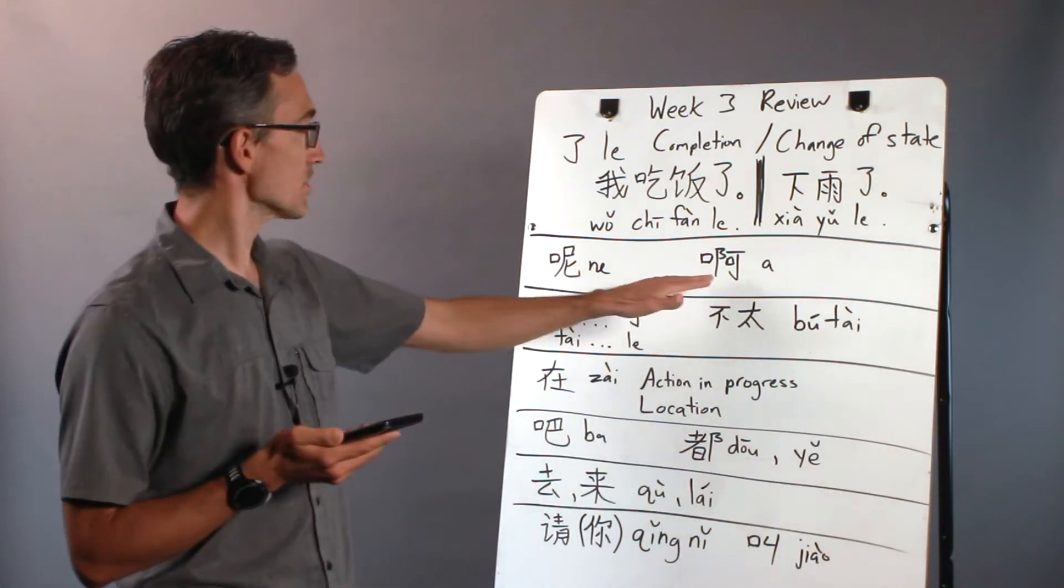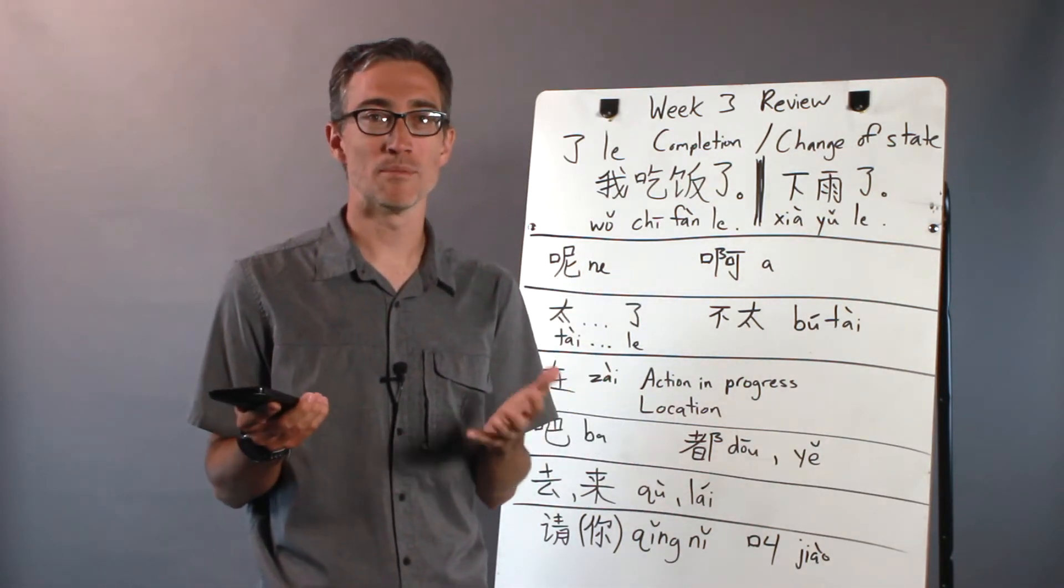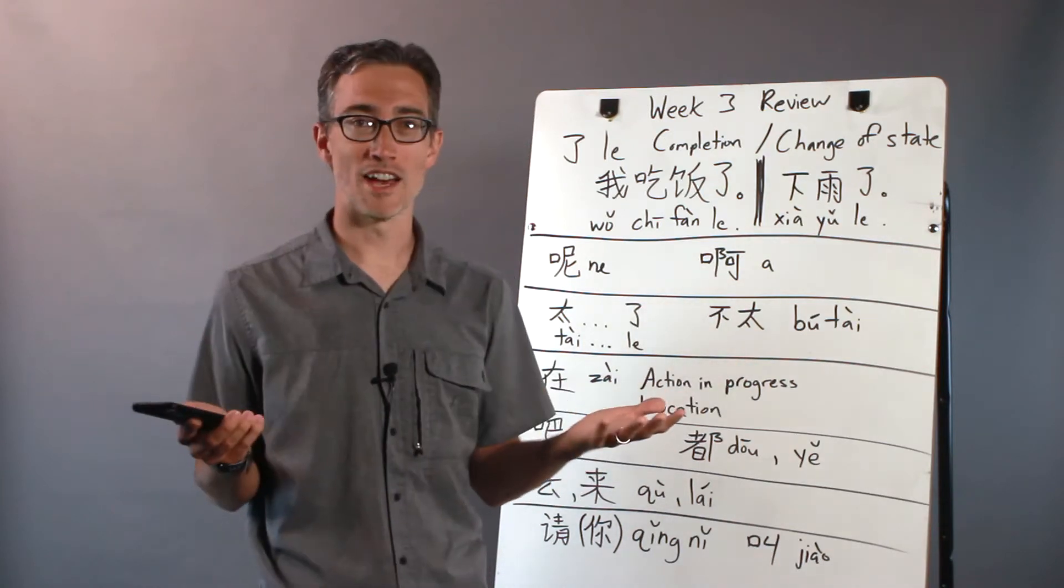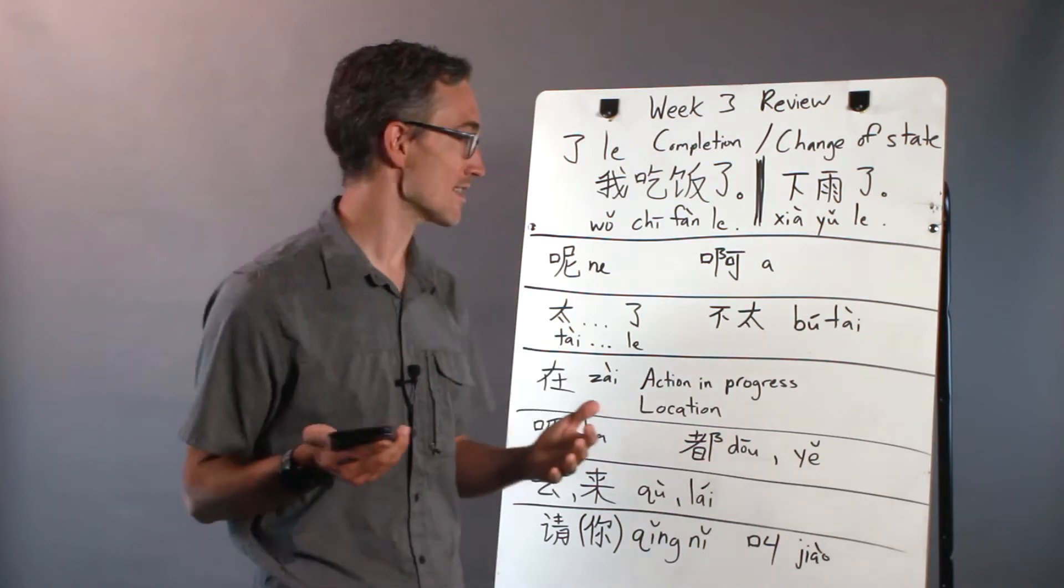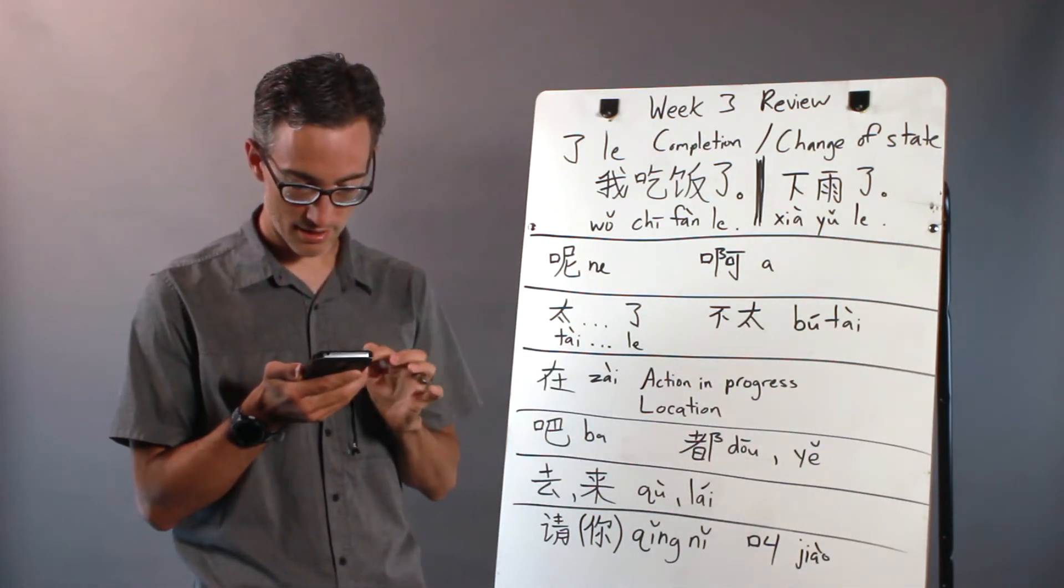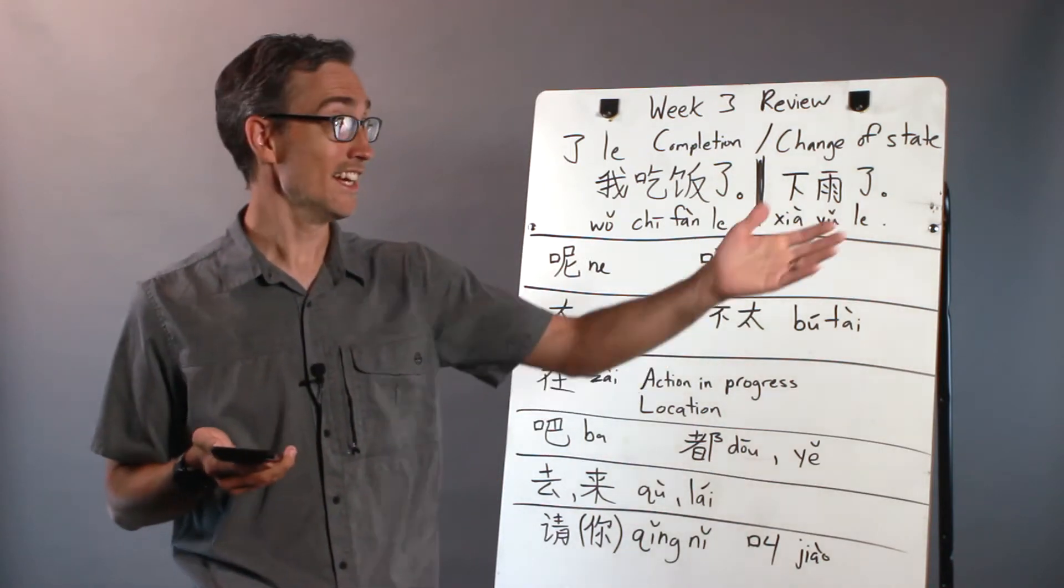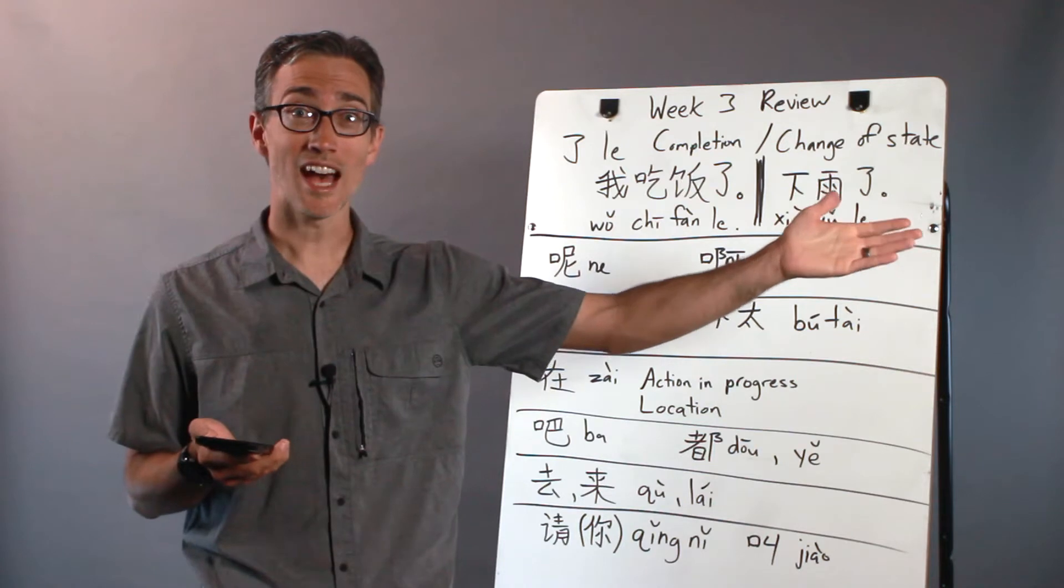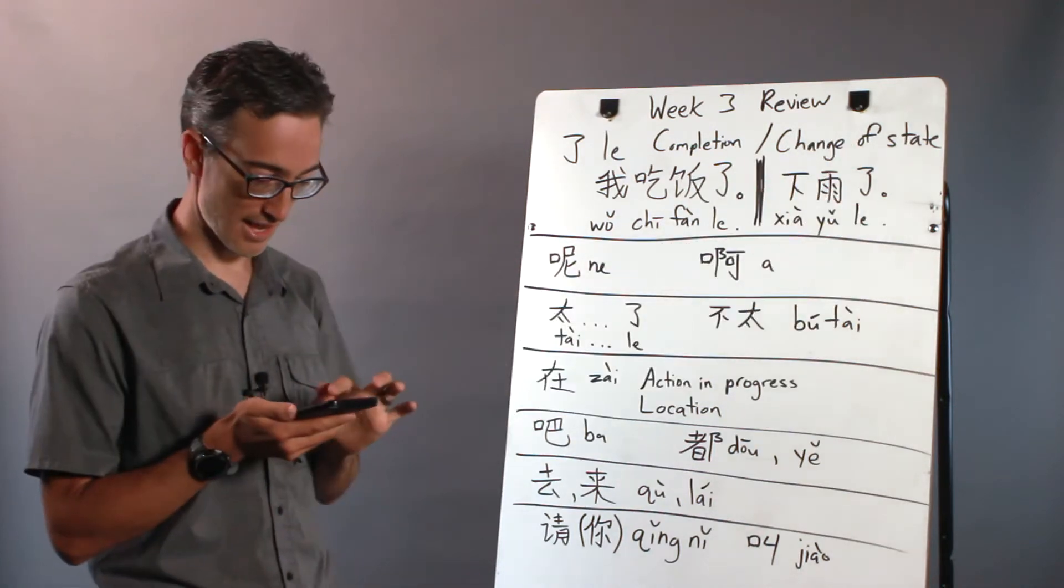The next one we talked about was 啊 (a). 啊 is awesome because it's basically just a verbal exclamation point put at the end of a phrase and it just intensifies the phrase, whether it's a positive phrase or a negative phrase it makes it more intense. Some examples could be if I'm talking about a person who's super tall I could say 他很高啊, very tall.